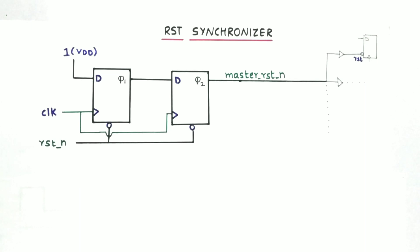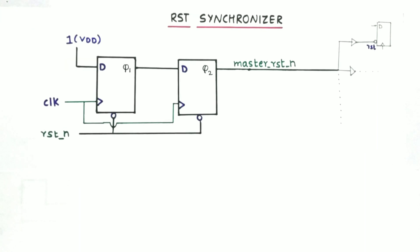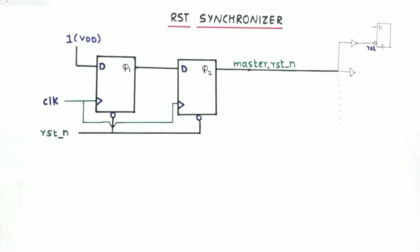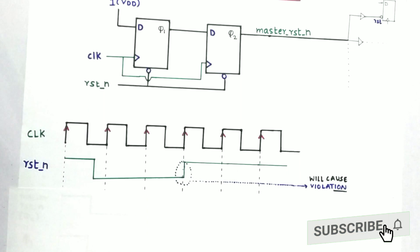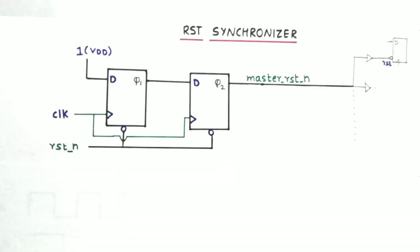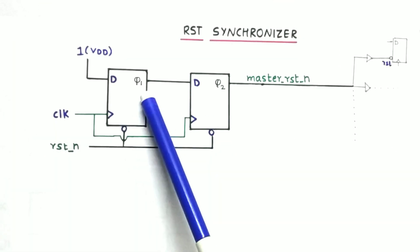So how does this work? As you can see, let us consider the same violation condition and understand this. So this is a clock and reset which I've shown already. Let's see the outputs at Q1 and Q2.